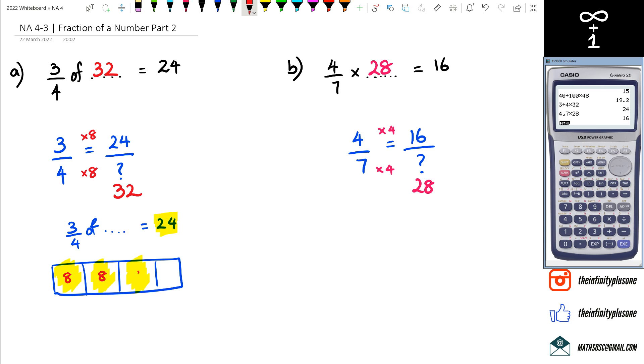And what we can then say is 4 times 8 is equal to 32. It's just another way of actually looking at this: 24 divided by 3 and then multiplying it by 4.